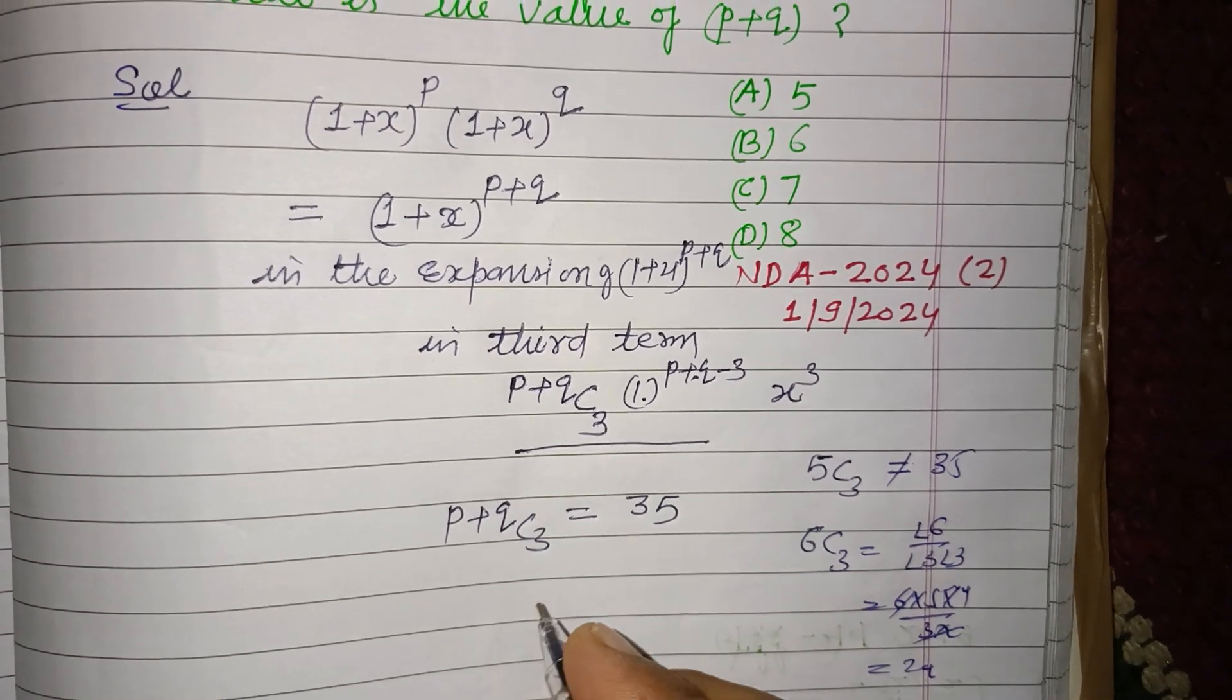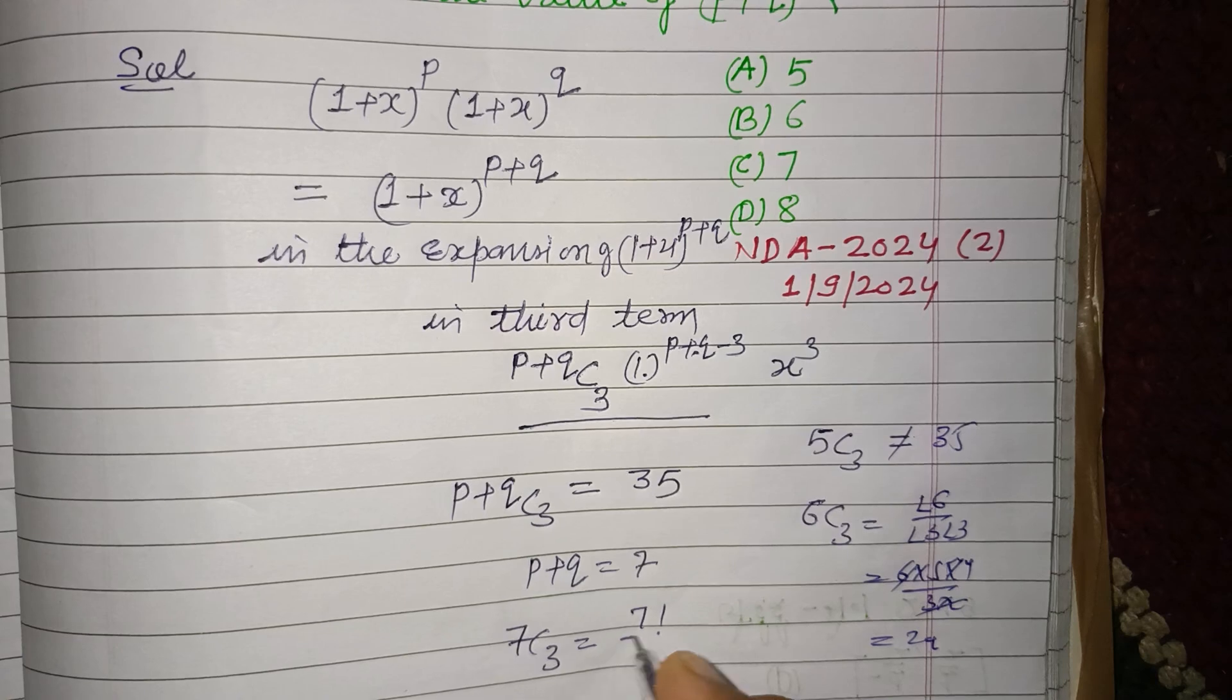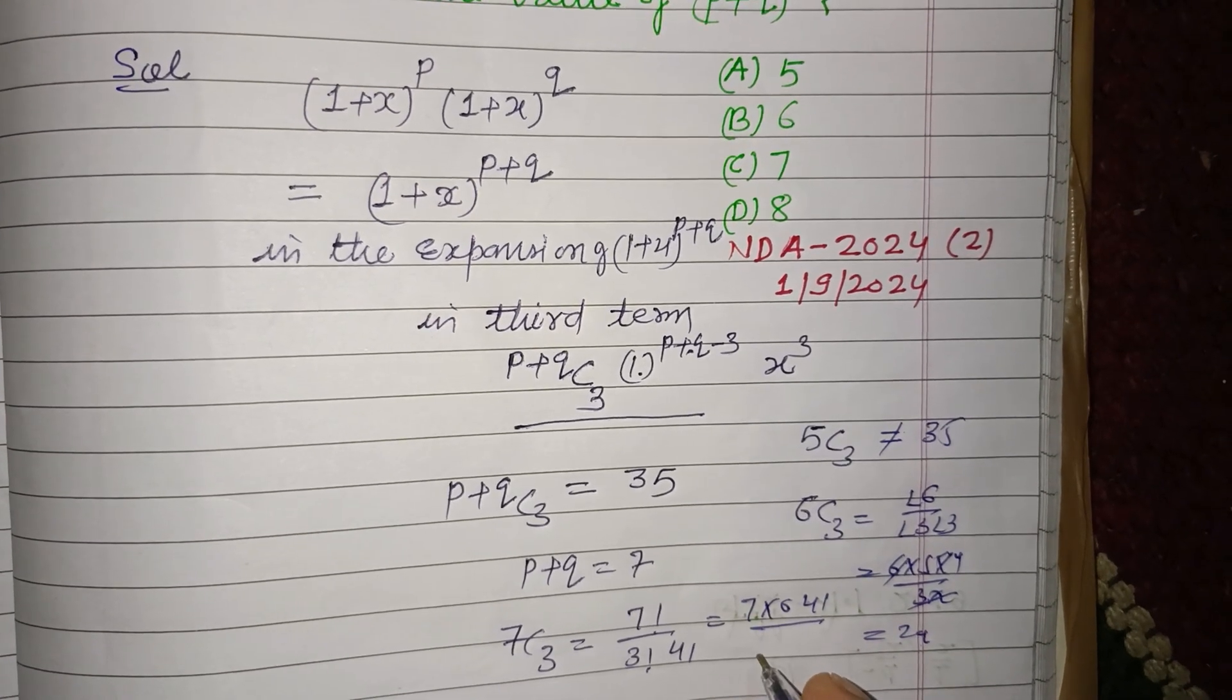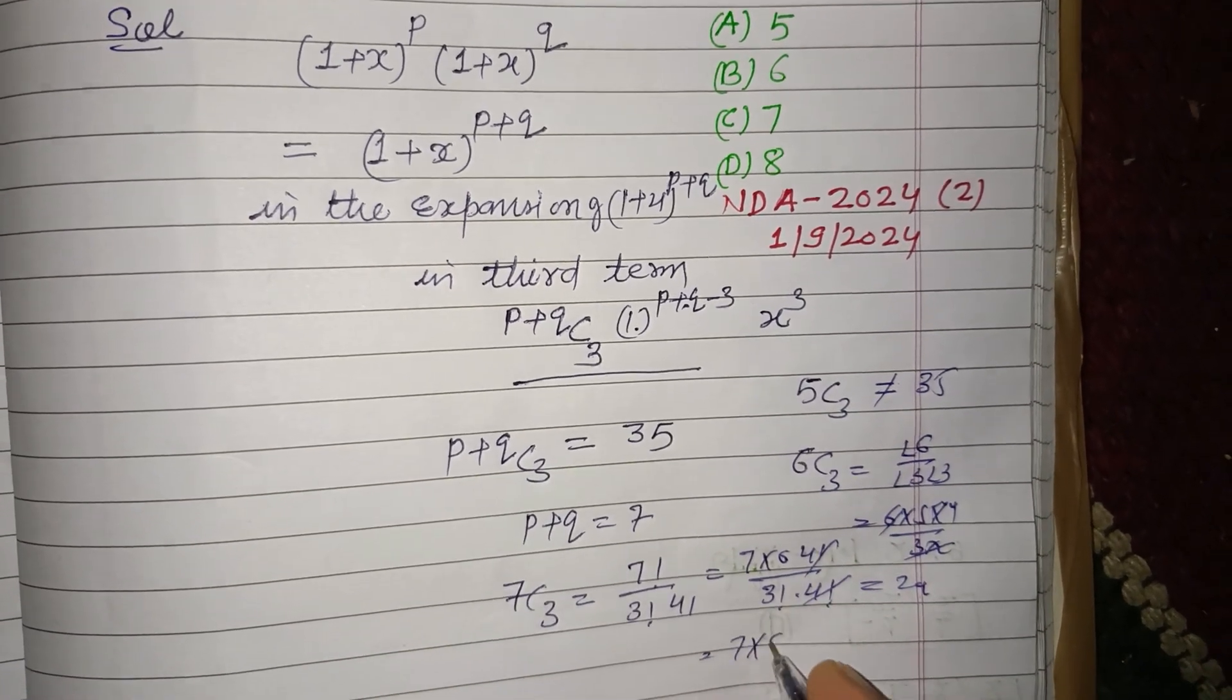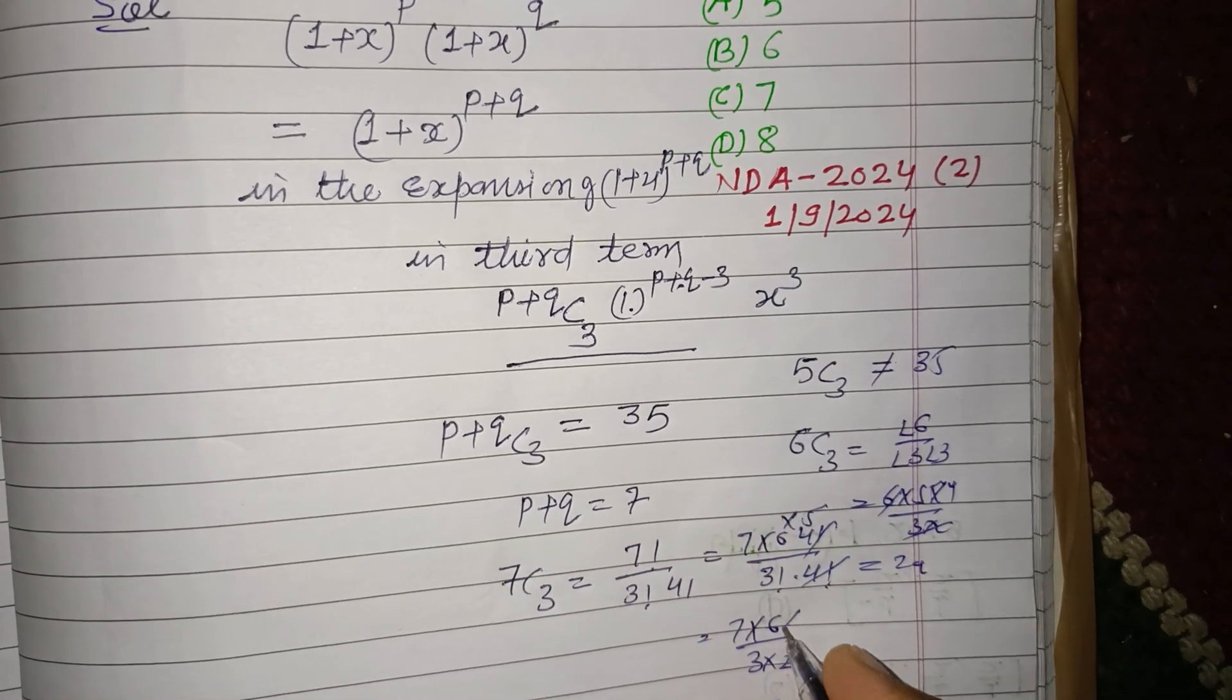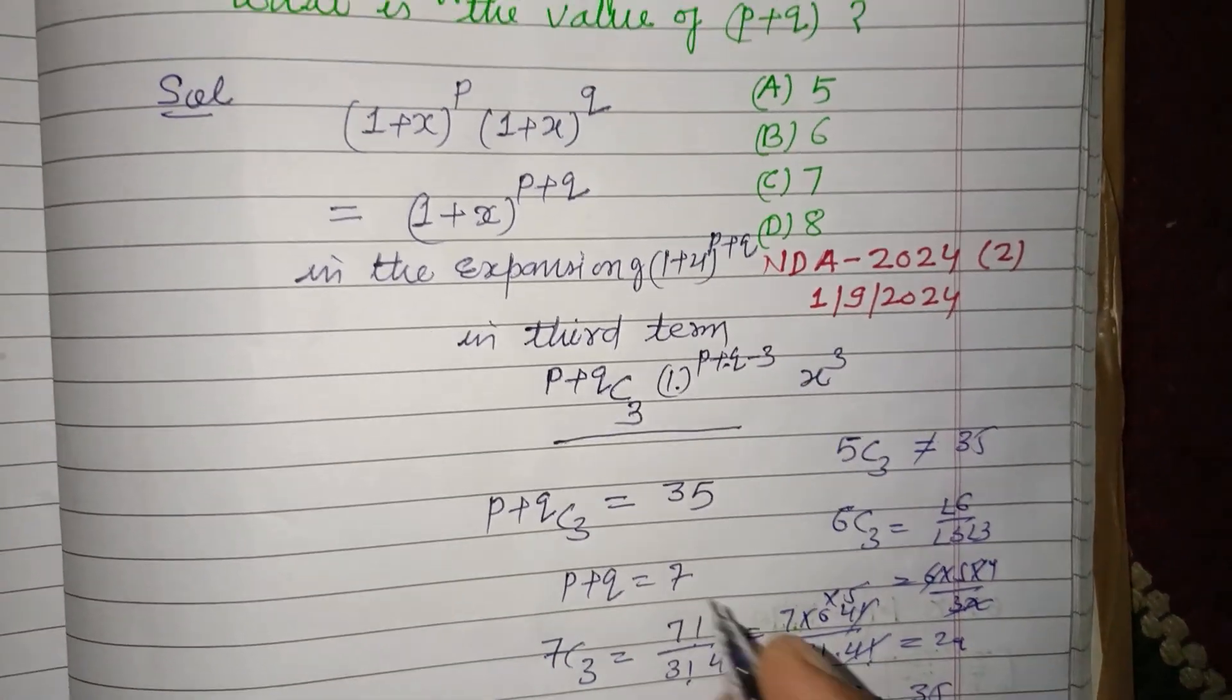So we take p+q equal to 7. So 7C₃ is equal to 7 factorial over 3 factorial 4 factorial. So this is 7 times 6 factorial over factorial 3 times factorial 4. This is 7 times 6 times 5 over 3 times 2 times 1. So 6 cancels, 7 times 5 is 35.